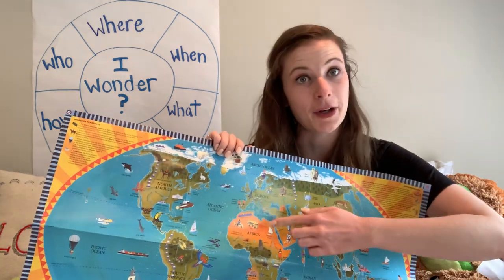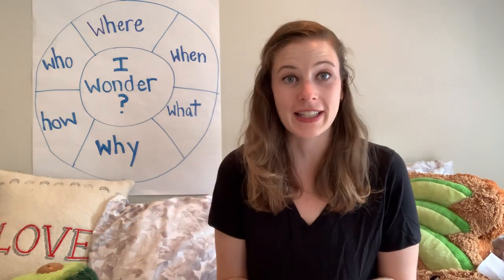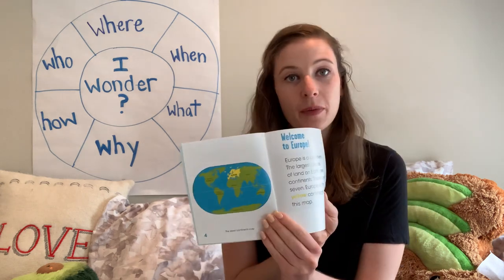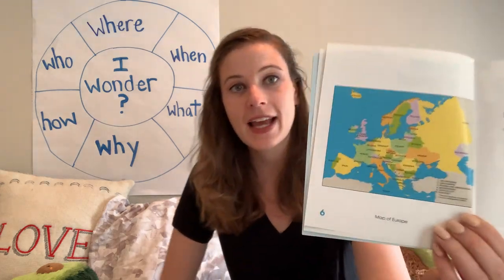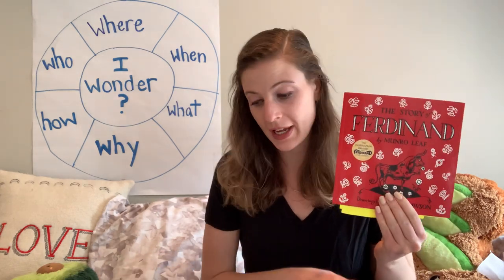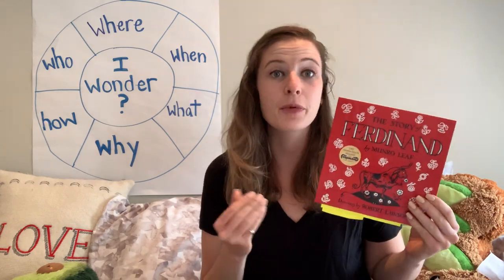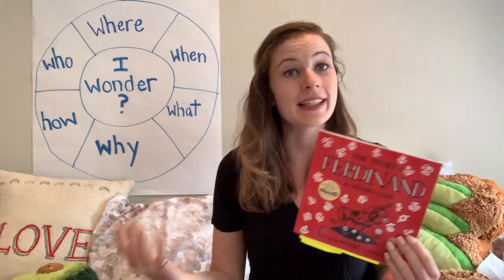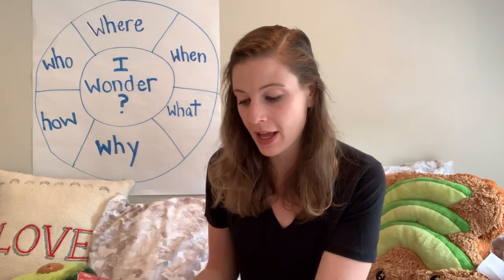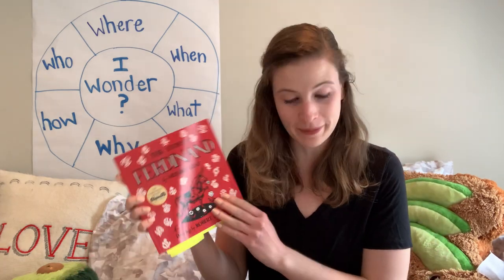The story of Ferdinand takes place in Europe, and more specifically in Spain. In our informational text about Europe that we read the other day, we saw it on a map, and they had a close-up map. We can see this country right here — that is Spain. We're reading this story because when you read a story set in a different country, it can help us imagine what it might be like to live or visit there. This is a storybook, not an informational text, but it is set in Spain and we might learn more about Spain from it.